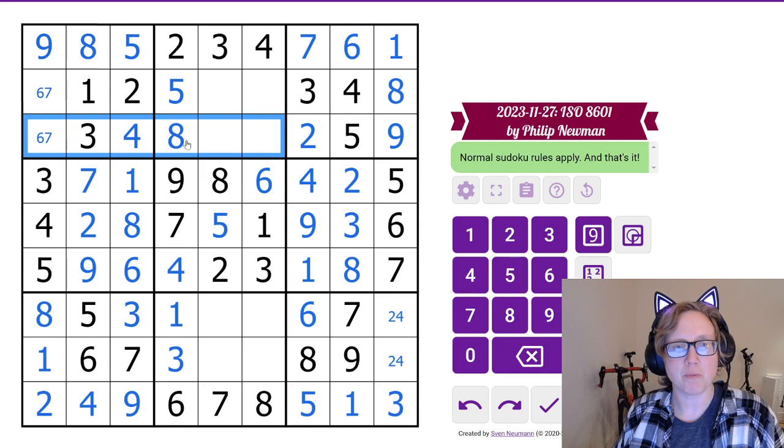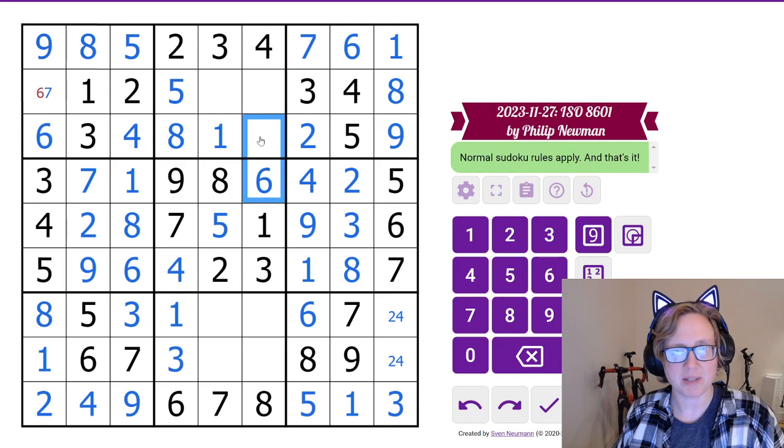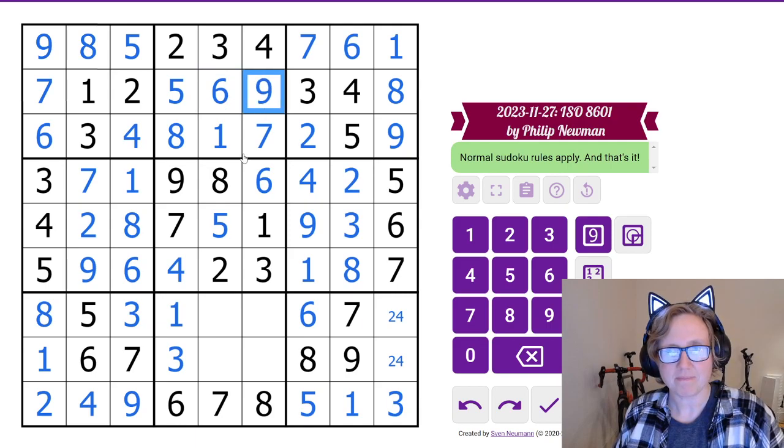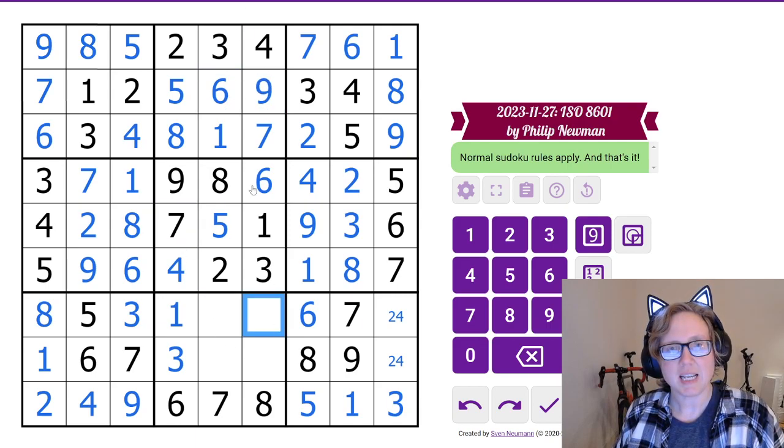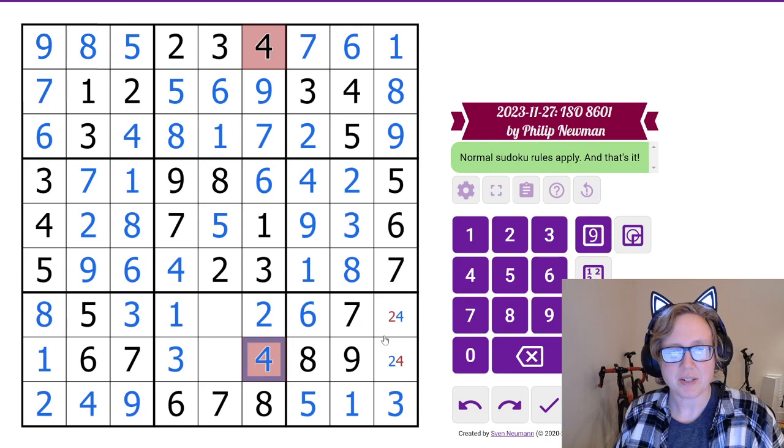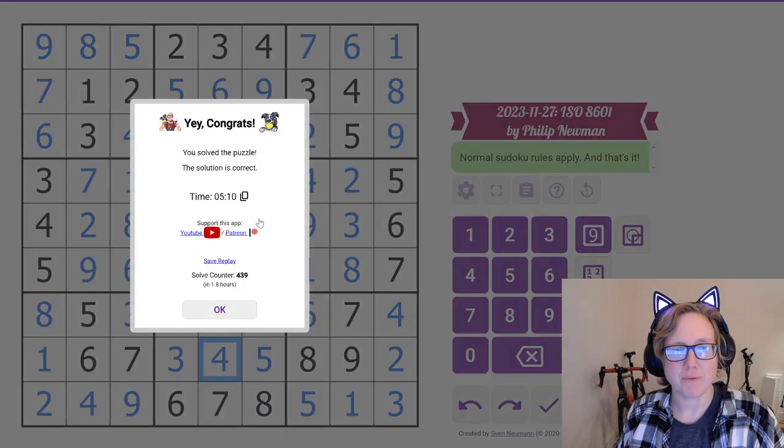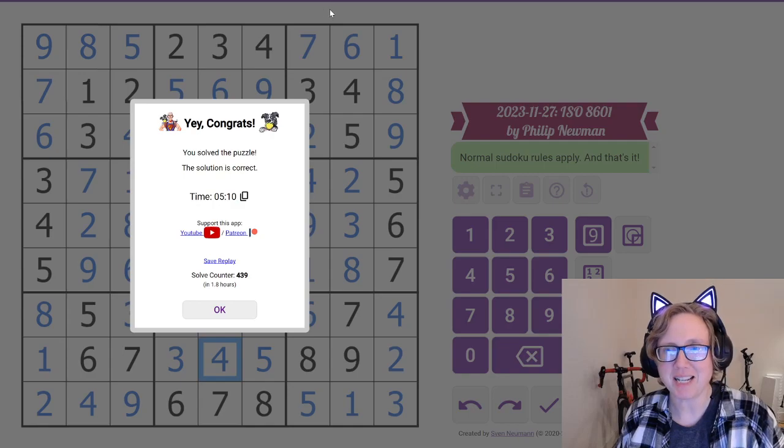I need to place a 1 in this row, and the only place I can do it is here. The only place I can put a 6 in this row is here, because the 6 sees that spot, and so this is a 7. Now I need a 6 and a 9. And I need a 2 and a 5 in this column, and that resolves the 2, 4 pair. And I need just a 9 in this row at this point, and a 4. And that's how you solve Philip's ISO 8601 Classic.